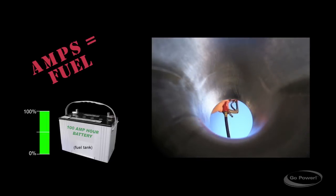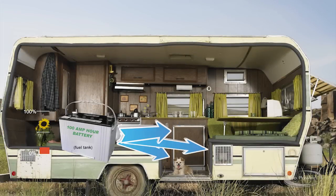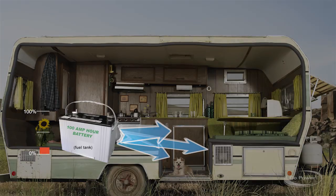We consume gallons of fuel out of a gas tank in our car when we run the motor, just like we consume amp hours back out of the battery when we run anything in the RV like our water pump, our furnace fan, refrigerator circuit, anything like that. It's pulling amp hours out of the gas tank just like we pull gallons of fuel out of the gas tank.